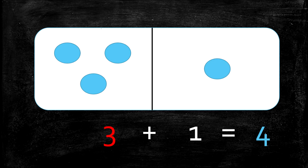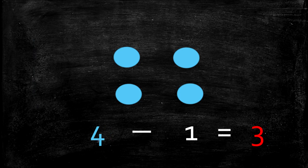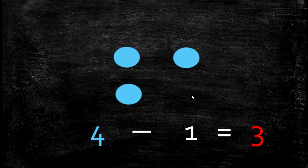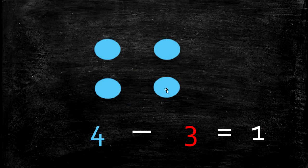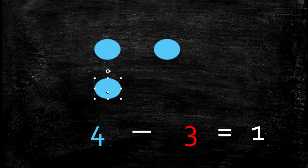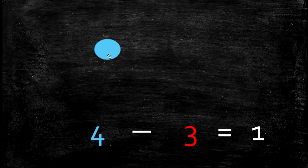We're going to look at our subtraction facts. If we have 4 minus 1, we'll have 3. So 4 take away 1 — we have 1, 2, 3, 4 — and we're going to take 1 away. How many do we have left? Did you guess 3? Yes, you'd be right. We have 3 left, because 4 minus 1 equals 3. Now if we have 4 and we take away 3, we'll have 1 left. We have 1, 2, 3, 4, and we're going to take away 1, 2, 3. How many do we have left? 1. Yes, because 4 minus 3 equals 1.